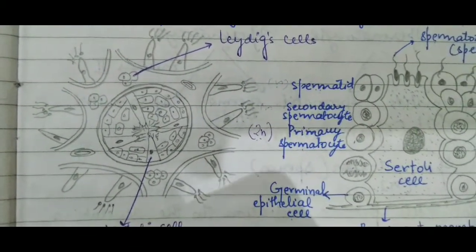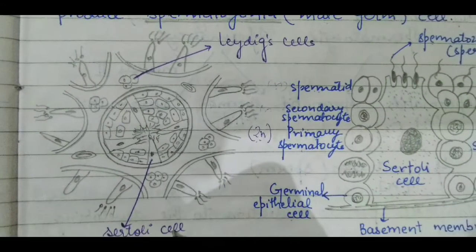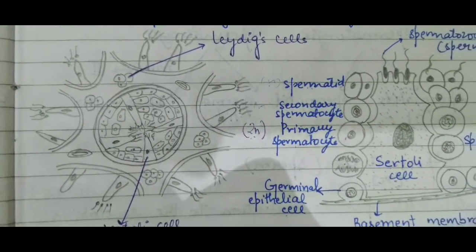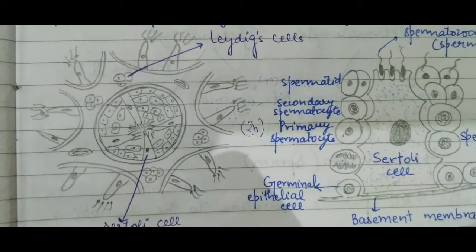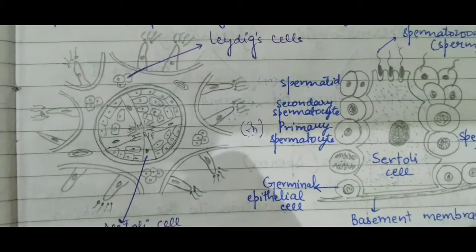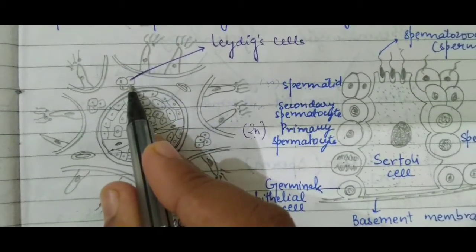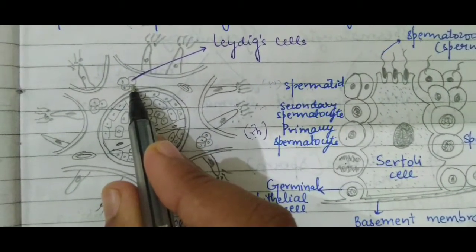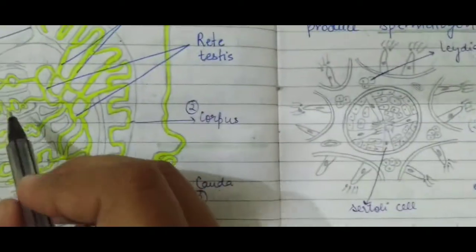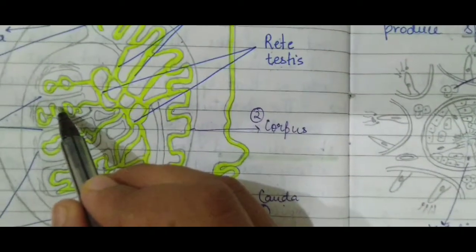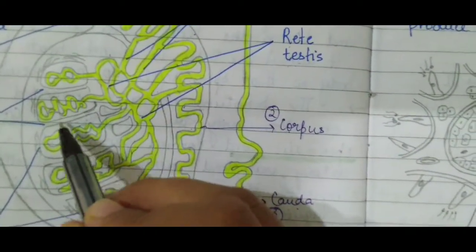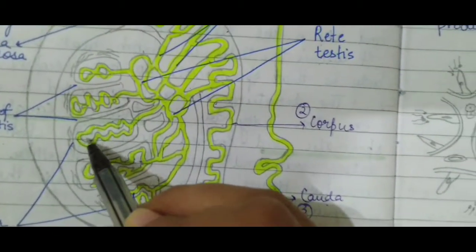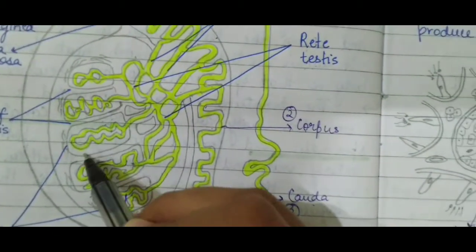Sertoli cells are also called sustentacular cells and nurse cells. First, we will talk about Leydig cells. Leydig cells are present in between the seminiferous tubules — that is, they are present in the spaces between the seminiferous tubules.